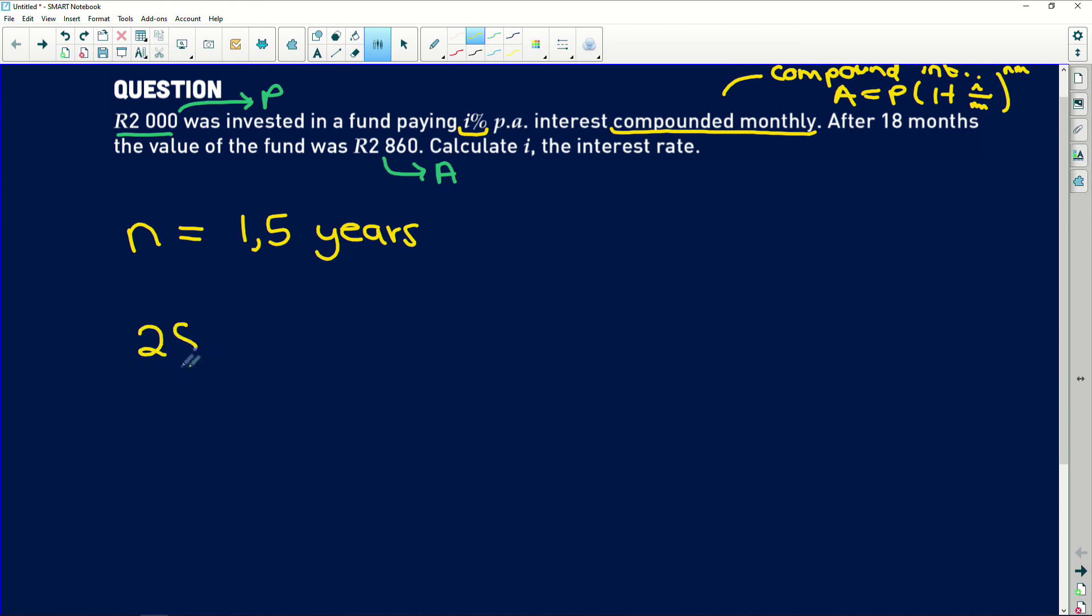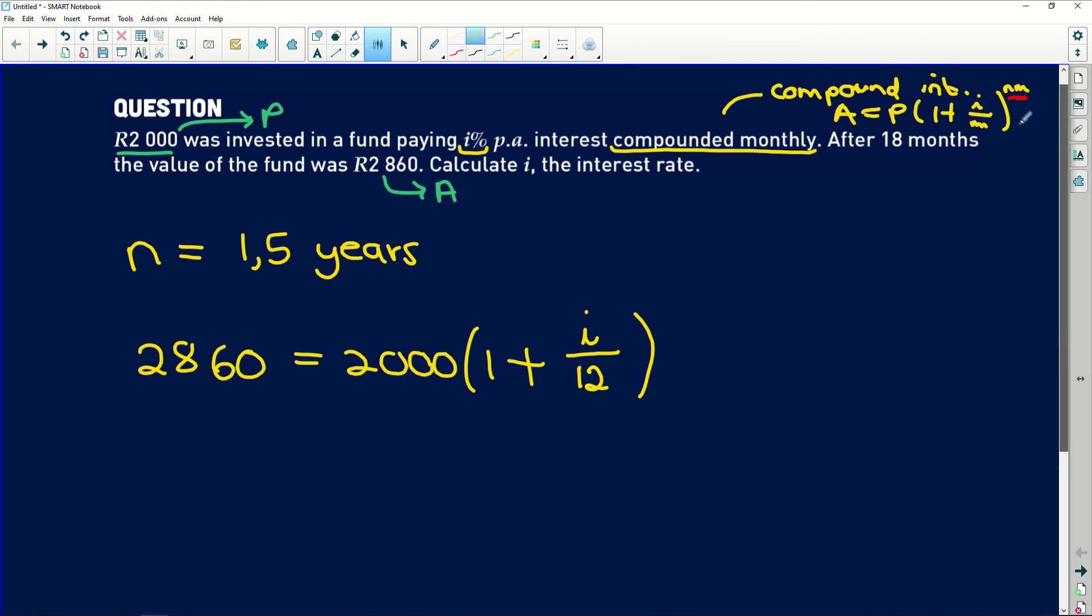So now easy peasy, substitute it into the formula. We have 2860 Rand equals 2000 Rand, and because it's compounded monthly we go (1 plus I over 12), and because it's compound interest we raise it to our power. And that is 18 months. Remember this N times M is the same as saying the number of years multiplied by the number of compoundings. So if the number of years is 1.5 and it's compounded 12 times in a year, we're going to get 18.